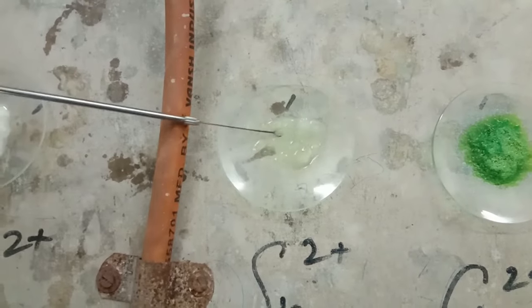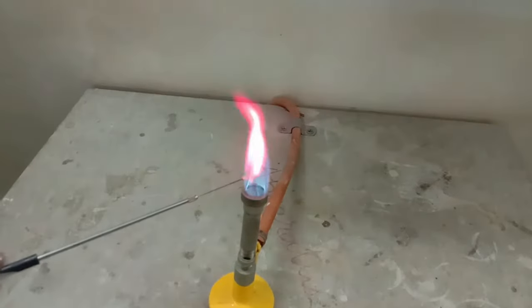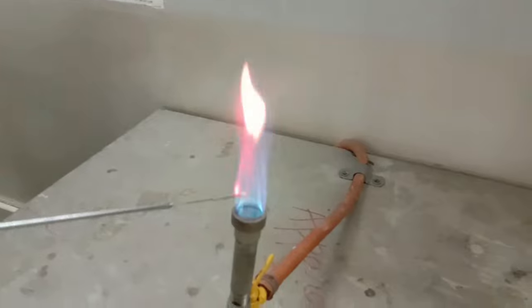Now take some amount of strontium slurry on Nichrome Loop holder and heat it over Bunsen's burner. You will see that strontium salts burn with crimson red flame.